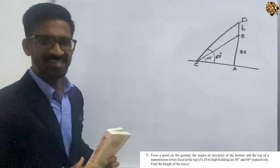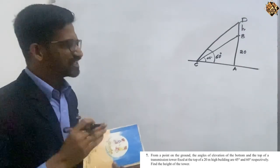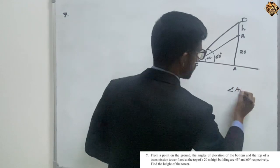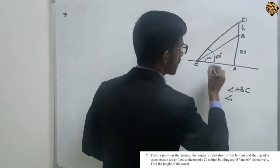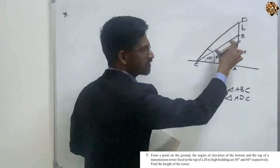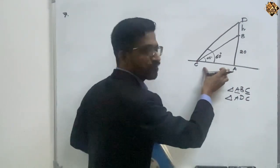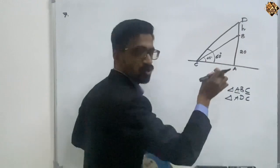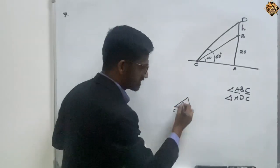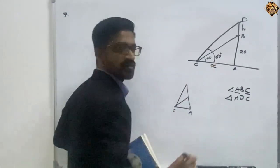Now to solve this, please students keep in mind — whenever we get two triangles in a question, most questions will have two triangles. So we need to find the common side of these two triangles. Triangle ABC and triangle ADC — the common side is AC. Both triangles are on the same base AC.